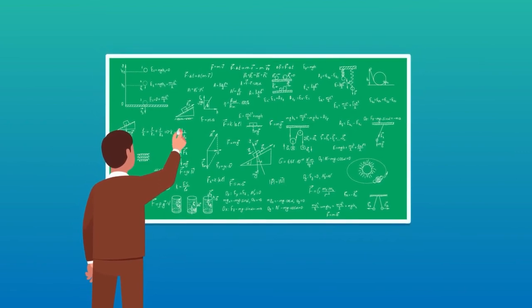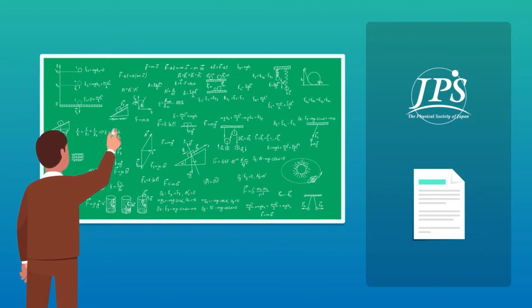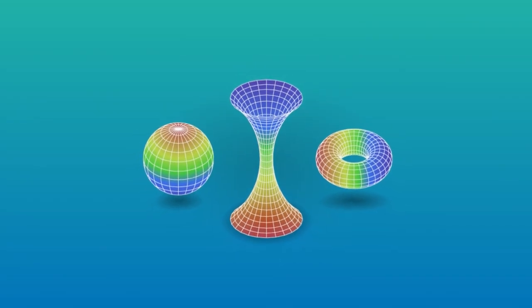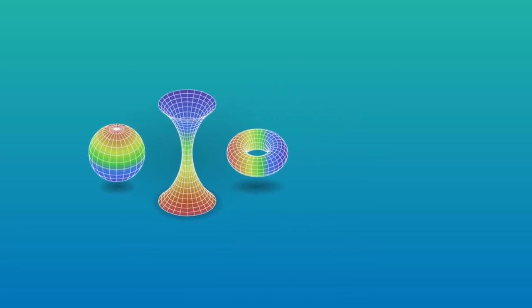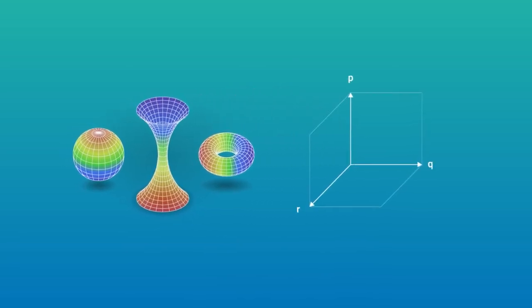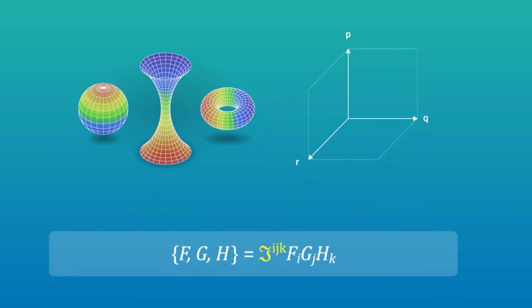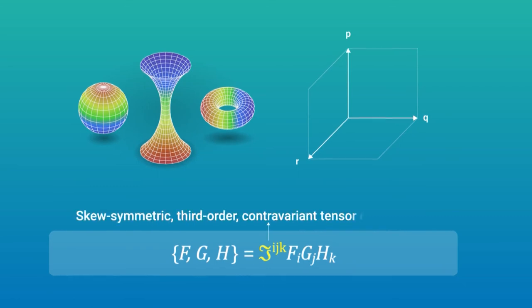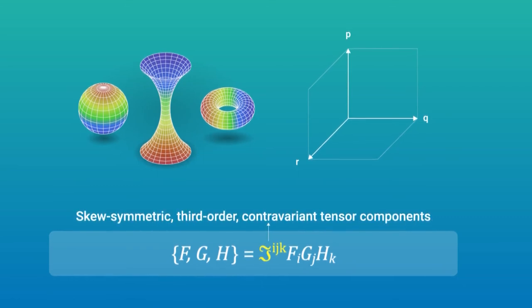Professor Naoki Sato from the University of Tokyo managed to evade this problem. Starting from a differential geometric approach, he constructed a framework for a three-dimensional phase space with generalized Poisson brackets characterized by antisymmetric third-order contravariant tensors.